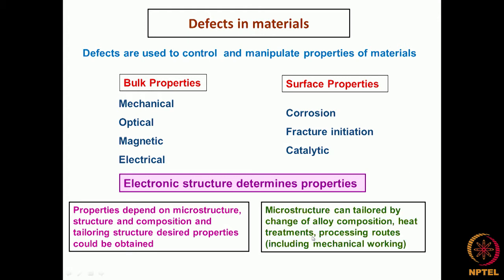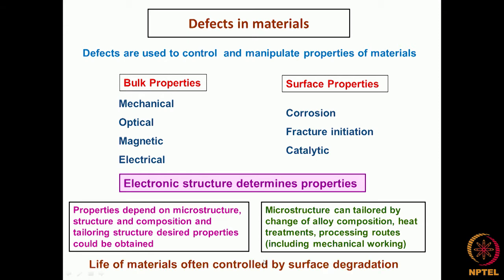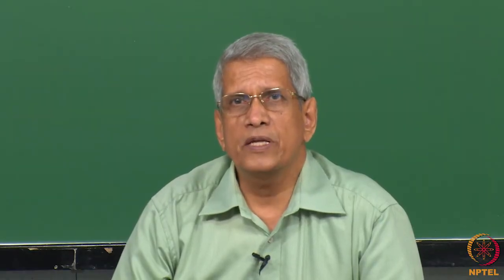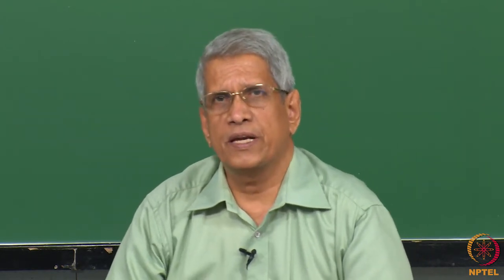However, this microstructure can be controlled. Microstructures can be tailored by changing the composition of the alloy, by heat treatment, and various processing routes like mechanical processing — various types of microstructures could be obtained and this way we can control the property of the material. In fact, the life of a component is often controlled by surface degradation and not by bulk property changes. That is the reason why understanding the surface property of the material is very important. Before going further, let us look at what all the defects are present in the material.